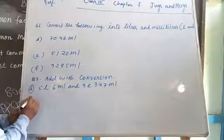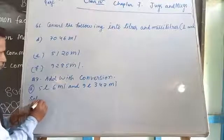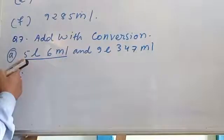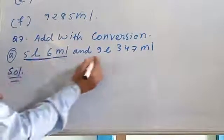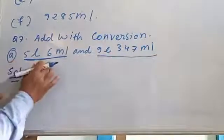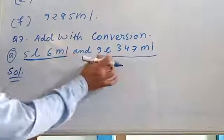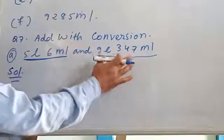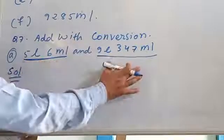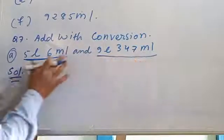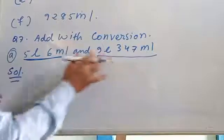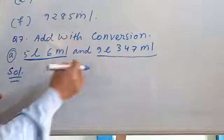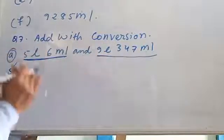Here I am going to write the solution directly. We have 5 liters 6 milliliters and 9 liters 347 milliliters. These two numbers need to be added — but not simply added. First you need to convert them, then you will add.